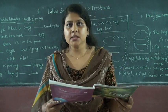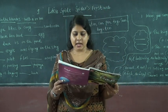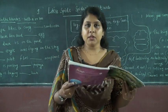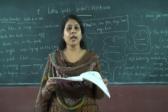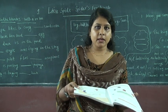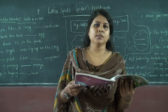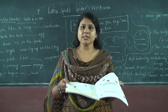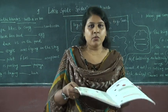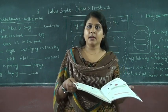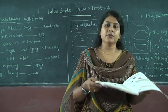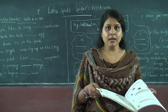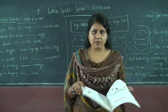All of you take page number 37. First exercise: fill in the blanks with A or AN. A is used before the naming words that do not begin with a vowel. We can use AN before the vowels. The vowels are A, E, I, O, U.